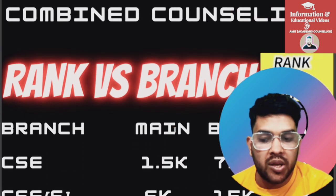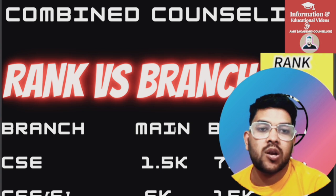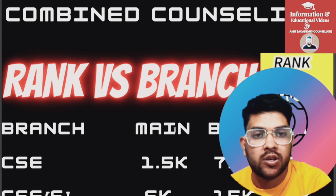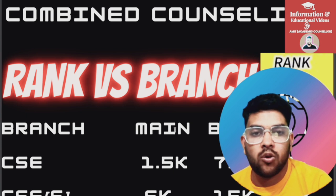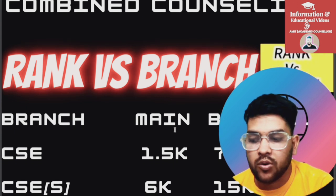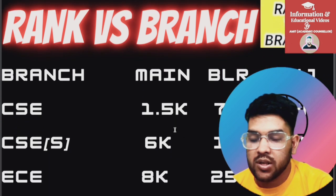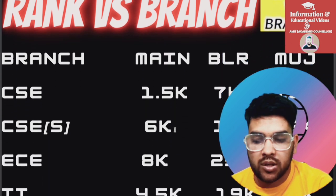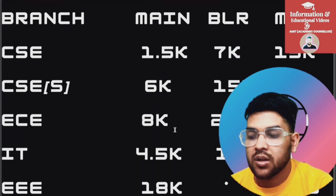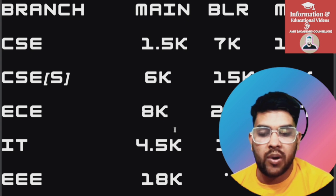Now for rank versus branch: for CSC, 1,500 rank is required for the main campus Bangalore, 7,000 for Manipal, and 13,000 for Jaipur. This data is applicable up to the last round — cutoffs increase with each round. For CSC Special, cutoffs are 6,000, 15,000, and 25,000. For ECE: 8,000, 25,000, and 35,000. For ID: 4,500, 19,000, and 30,000. For EE: 18,000 in main campus Bangalore — there is no EE branch in Bangalore.